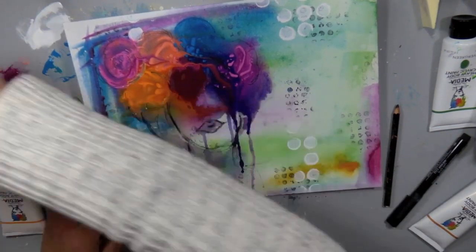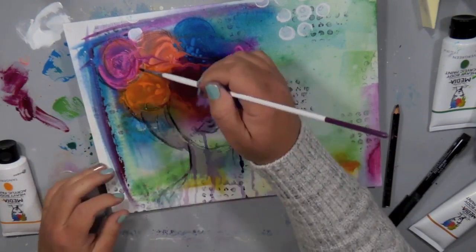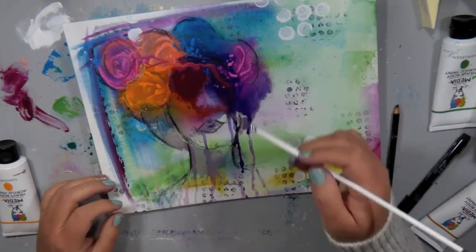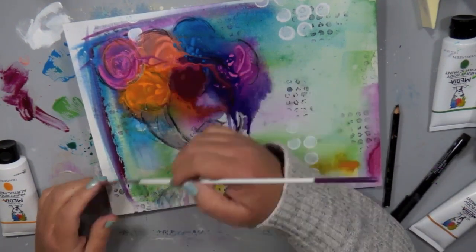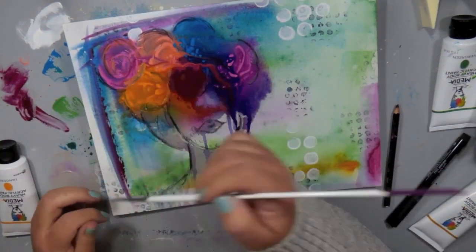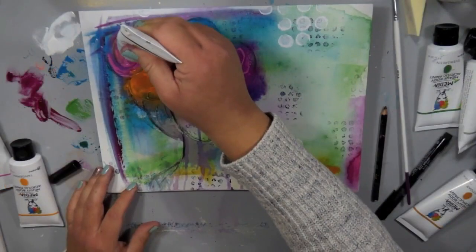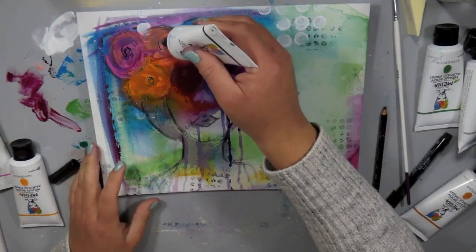So I'm taking the All pencil again which is a water-based pencil and I'm kind of defining some of the areas of the stencil, the bottom of the face, her lips. I added some shoulders and I'm just adding some more light detail to the flowers.